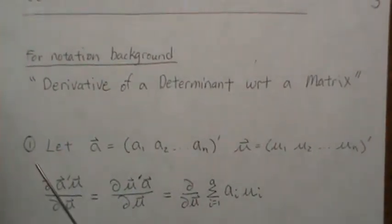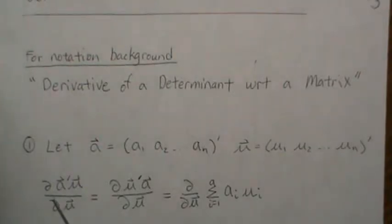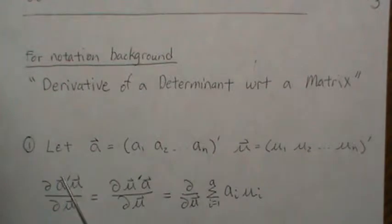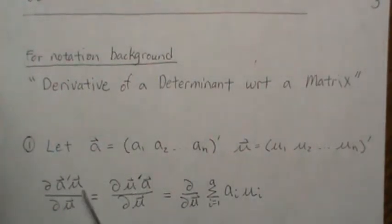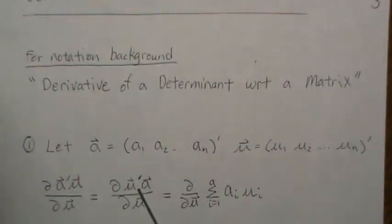For this video we'll go through a couple of points and then an example. Point one: let a be a column vector and μ be a column vector of length n. We want to take the partial derivative of a'μ with respect to μ. This is a scalar, so if we take the transpose of it it's still the same. Either way we get the same answer, and when you take this vector product you get the sum of a_i μ_i.